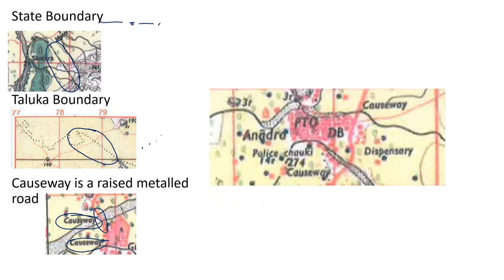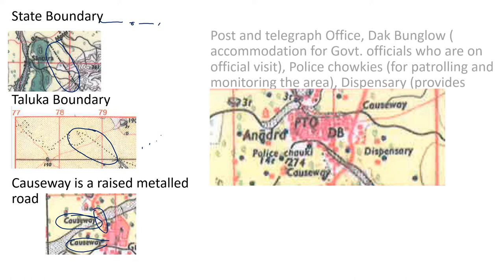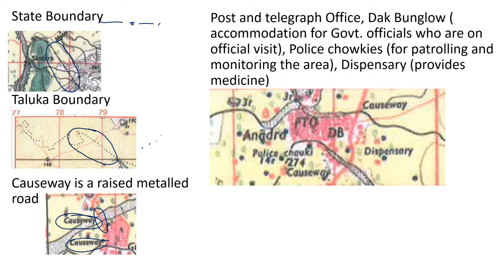There are a number of symbols and we will learn them now. The first one is post and telegraph office — PTO. Then dak bungalow — DB is for dak bungalow. Dak bungalow is used by government officials when they are on an official visit, so they stay there.